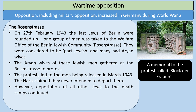Another example of opposition was the Rosenstrasse. On the 27th of February 1943, the last Jews of Berlin were rounded up. One group of men was taken to the welfare office of the Berlin Jewish community on the Rosenstrasse. They were considered to be part Jewish and many had Aryan wives. The Aryan wives of these Jewish men gathered at the Rosenstrasse to protest. These protests led to the men being released in March 1943, with the Nazis claiming they never intended to deport them. However, deportation of all other Jews to the death camps continued. This is an important example of how a protest was organised and was able to influence and change what the Nazis were planning to do.